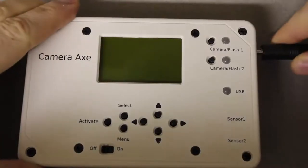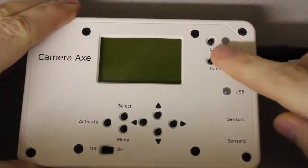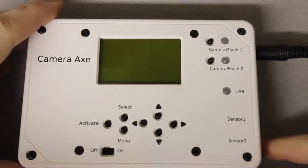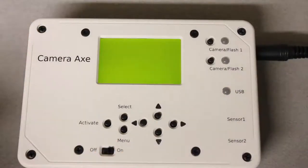So the first thing you want to do is you'll plug in your camera cable into camera port number one. Then you'll turn on the Camera Axe.